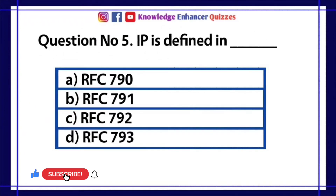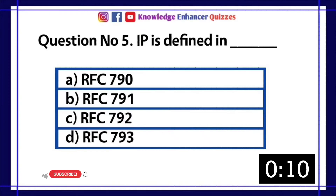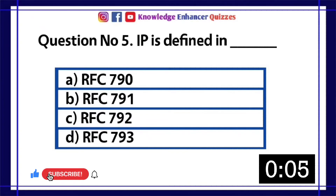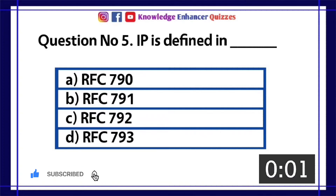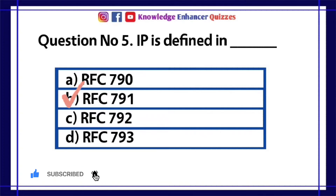Question number 5. IP is defined in — A. RFC 790. B. RFC 791. C. RFC 792. D. RFC 793. Option B is the right answer.